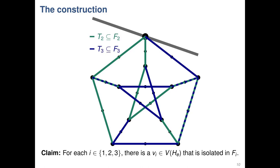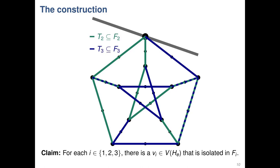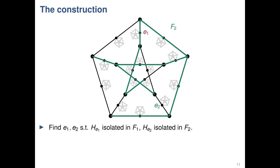Applying the same counting argument on the zoomed-out graph: there will be some small copy where neither of its two connecting edges is in F1, and similarly some other copy with an isolated piece in F2. So any node inside the first copy and any node inside the second copy can only be co-connected in F3. But then I just pick a node inside one of those copies that is isolated in F3, and I'm done — the conjecture is false.